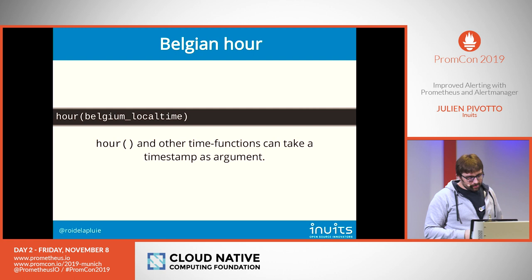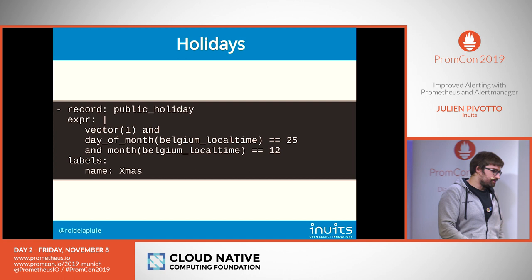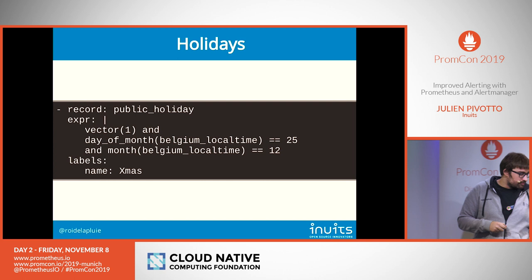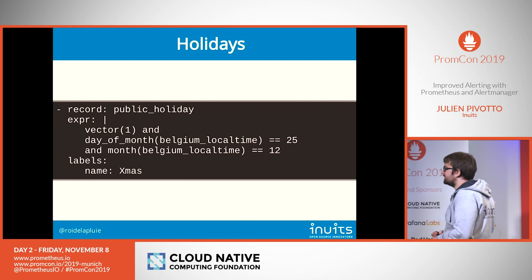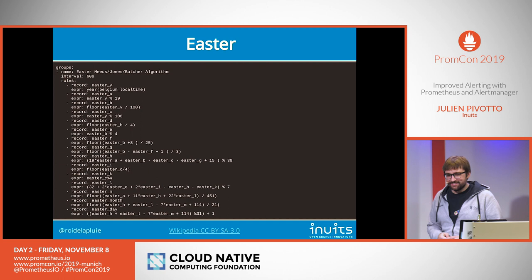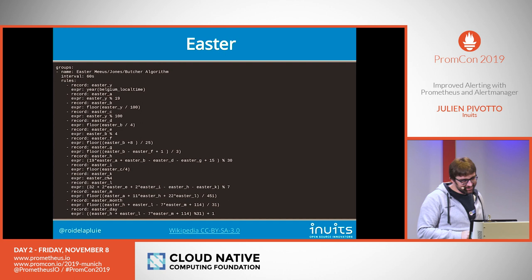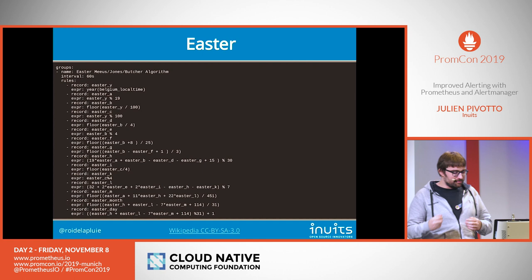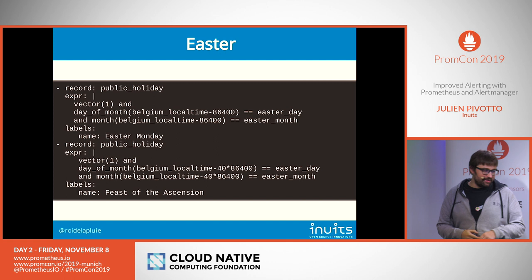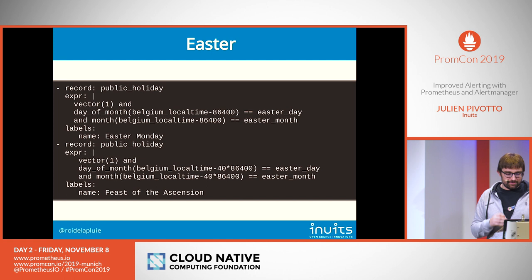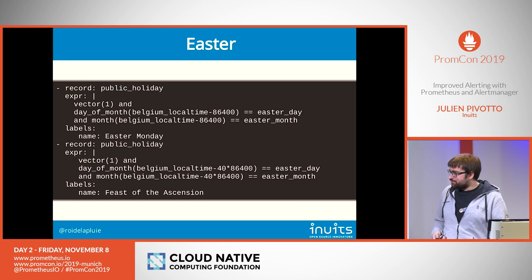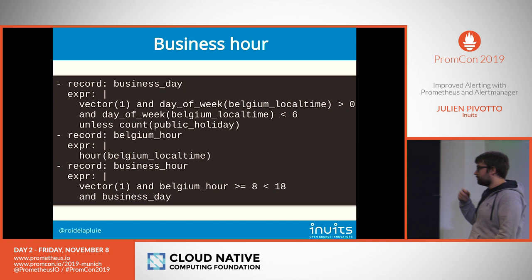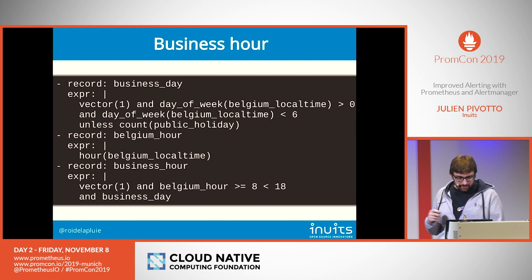We can also determine if it's a public holiday in Belgium. For Christmas, we check the day of month and month. For Easter, it's more complex since it moves — but once computed, you can record the public holiday value. Then you compute 'is this a business day?' — in Belgium that means Monday to Friday, unless it's a public holiday. And then 'is this a business hour?' — from 8 to 18 on a business day. Now we have metrics we can use in PromQL. We have more variations like Saturday morning schedules.